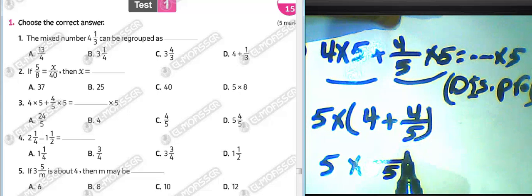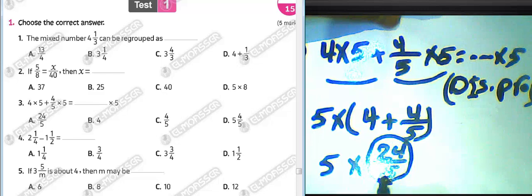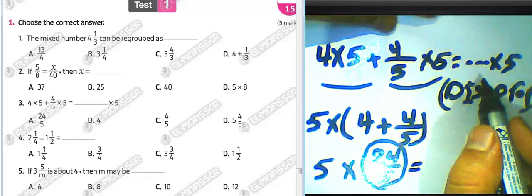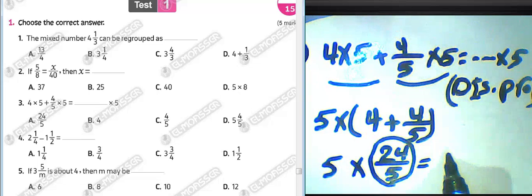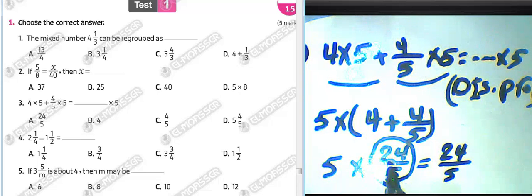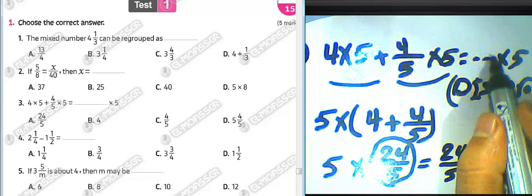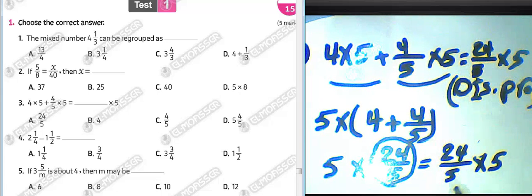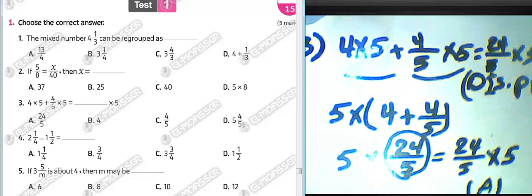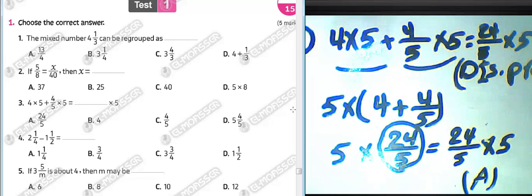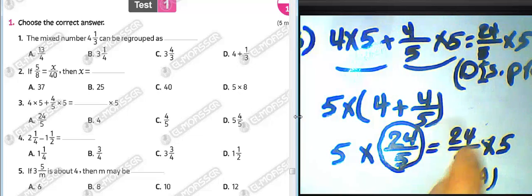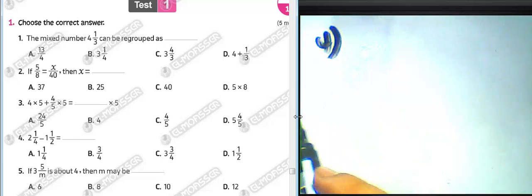We convert from mixed number to improper fraction: four times five equals twenty, twenty plus four equals twenty-four. The result is twenty-four over five times five. Using the commutative property of multiplication, we write twenty-four over five in the space. Choose letter A for question number three.